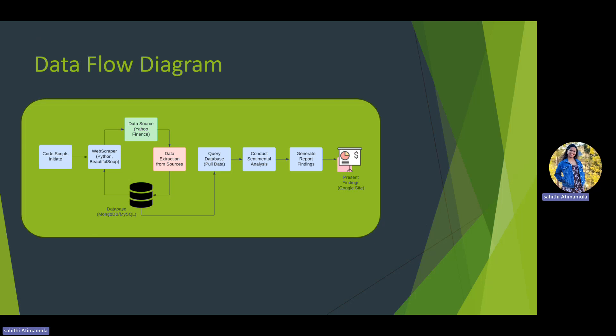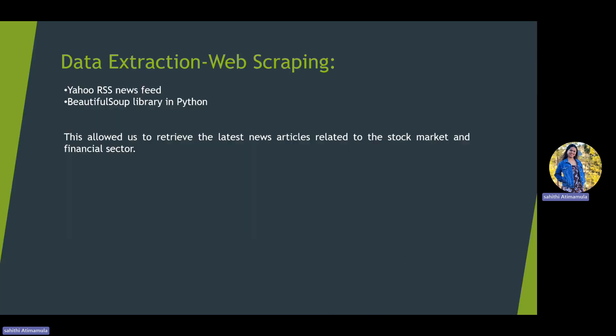Coming to the architecture of our project, the first step is collecting the data. We used the Yahoo Finance website for collecting news articles. We also considered Bloomberg and Finviz, but for this project we only used Yahoo Finance. To scrape the news from Yahoo Finance newsfeed, we used the BeautifulSoup Python library, and we extracted stock symbol, headlines, published date, published time, the link of the news article, and the description of the news.